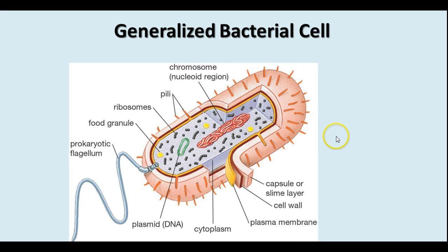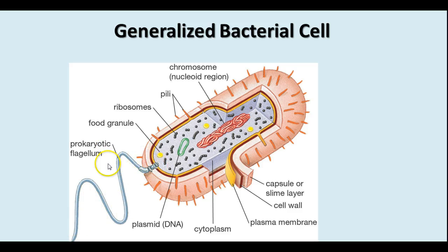Here's a generalized bacterial cell. We have the nucleoid region, which contains the single chromosome. We've got the cytoplasm with ribosomes present in it, the cell membrane and the cell wall, the flagellum for movement, and the pili, which are hair-like projections that allow for attachment to surfaces.